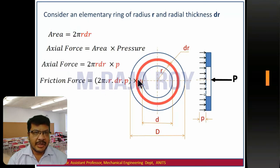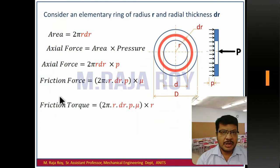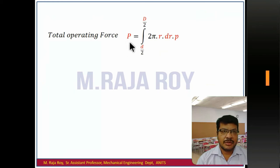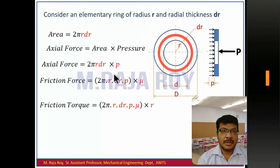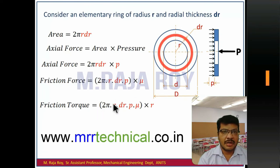Once the axial force is known, you can get the friction force by multiplying the axial force with coefficient of friction mu. Then the friction torque is obtained by multiplying the friction force with distance r. To find the total operating force, integrate the axial force from d/2 to D/2. If you integrate that equation you get the total operating force, and if you integrate the torque equation you will get the total torque transmitting capacity.